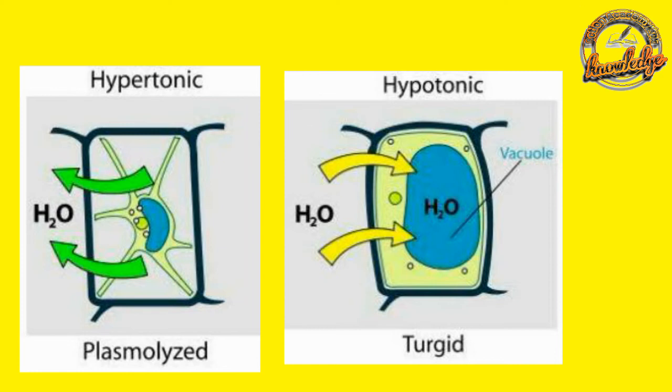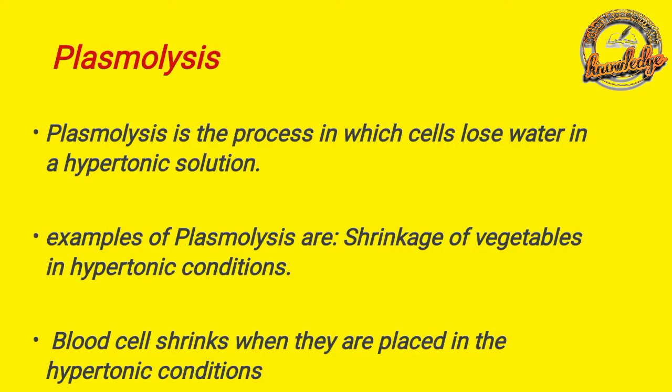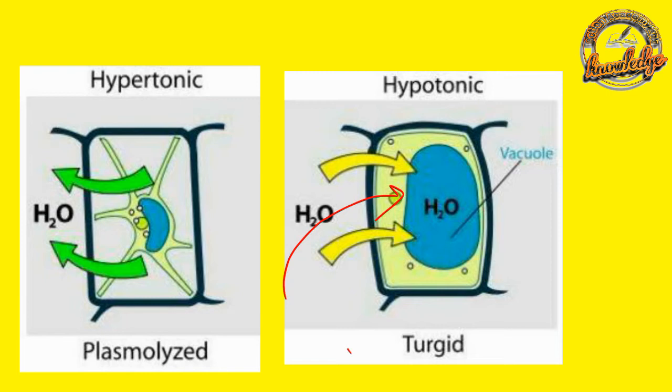The reverse process is called Deep Plasmolysis. In this reverse process, water will enter back into the cell. The cell becomes turgid. In the protoplasm, the cell returns to its normal shape. This phenomenon is called Deplasmolysis. Once the cell is in water, the cell becomes turgid.